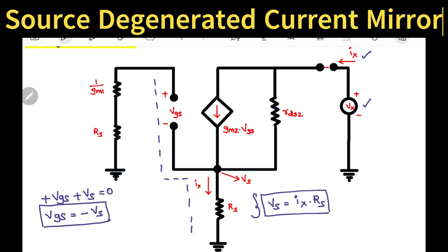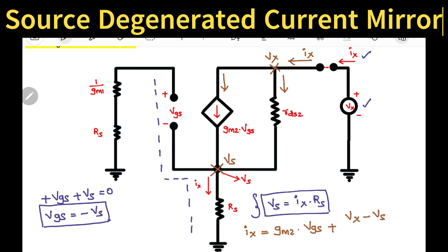Now we apply Kirchhoff's current law: sum of current entering equals sum of current leaving. The current entering is IX. So IX can be written as GM2 × VGS plus, if you observe, the voltage at this point will be Vx and the voltage at this point is VS, so it can be written as (Vx − VS) / Rds2. Next, simply replace VGS with −VS and in place of VS write IX × RS and solve to find the final output impedance.